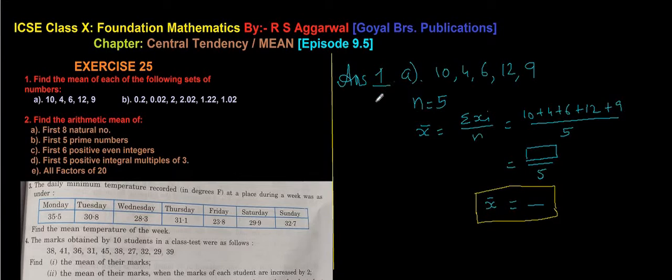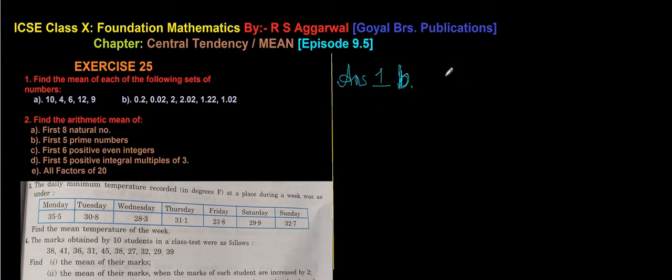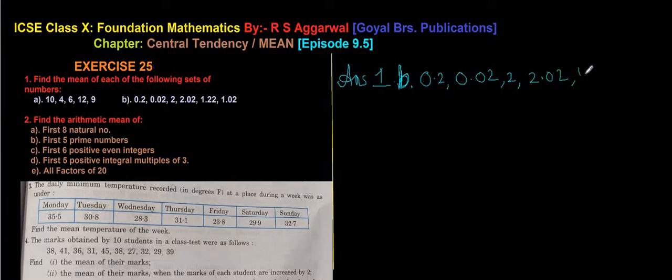For question 1B, the observations are: 0.2, 0.02, 2, 2.02, 1.22, and 1.02.